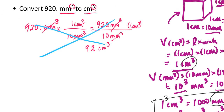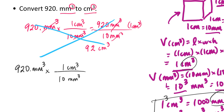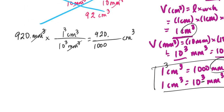Applying what we just learned back to the original conversion: if I want to convert 920 millimeters cubed, it's true that there are 10 millimeters in 1 centimeter, but if I'm going to cube the units, I have to cube the numbers that go with them as well. So this will be 920 divided by 10 to the third, or 1,000, giving an answer in centimeters cubed. 920 divided by 1,000 is 0.920 centimeters cubed. This same principle applies if the units are squared — you'd square both numbers in the conversion factor.